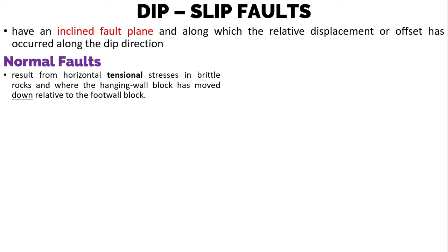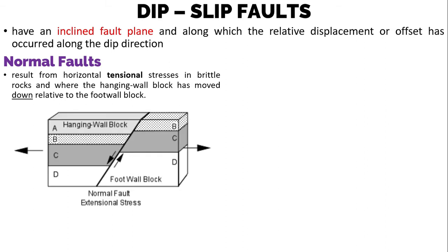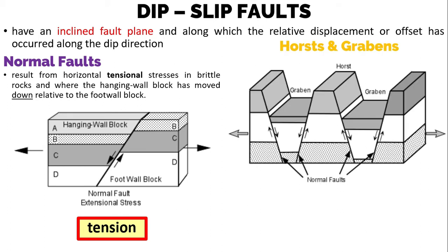In a normal fault, the hanging wall block has moved down relative to the foot wall block. Normal faults result from tensional stress, and they often occur in a series with adjacent faults dipping in opposite directions. In such a case, the down-dropped blocks form grabens and the uplifted blocks form horsts.